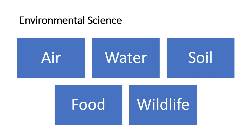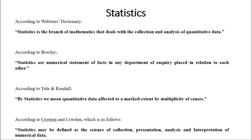So we can say that environmental science means we are talking about air, water, food, wildlife, and many other things which are around us.